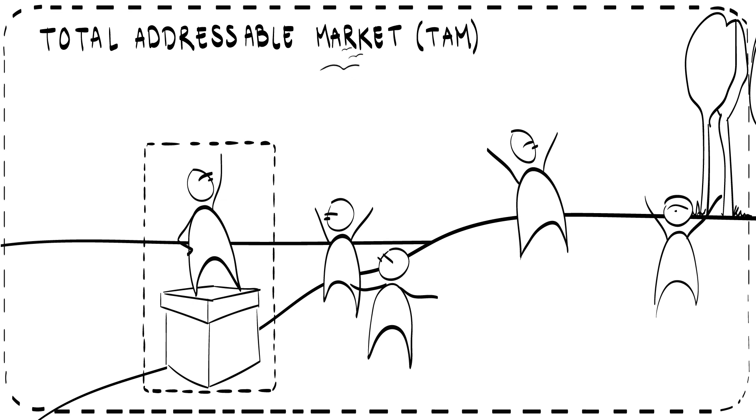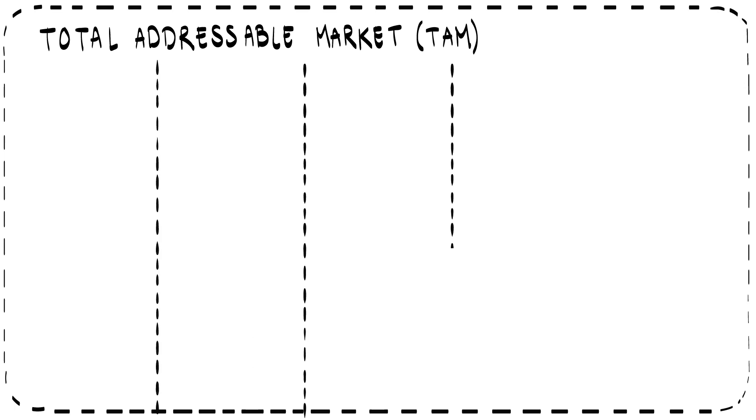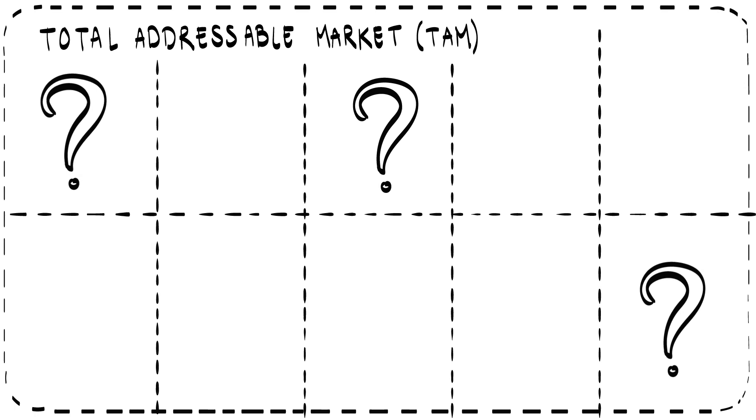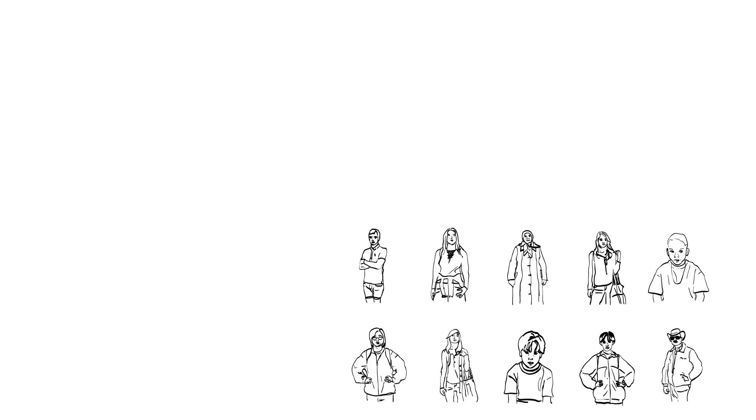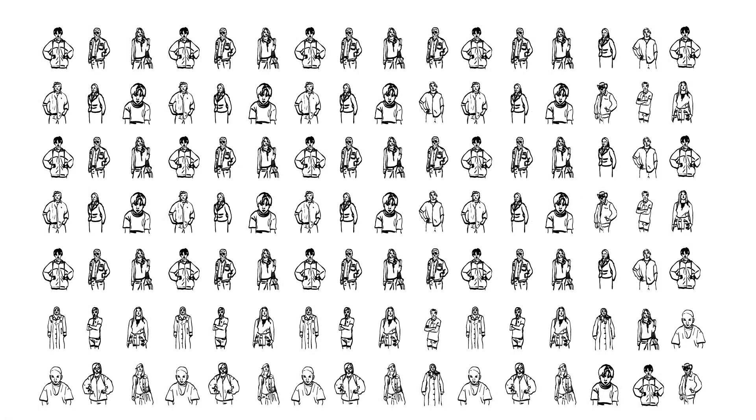Determining the total addressable market is already quite a challenge, but estimating your potential piece of that pie is even harder. Therefore you should proceed very cautiously in the beginning, discovering one customer at a time until you have found 10 real customers, then 20, then 50, then 100, and so on.